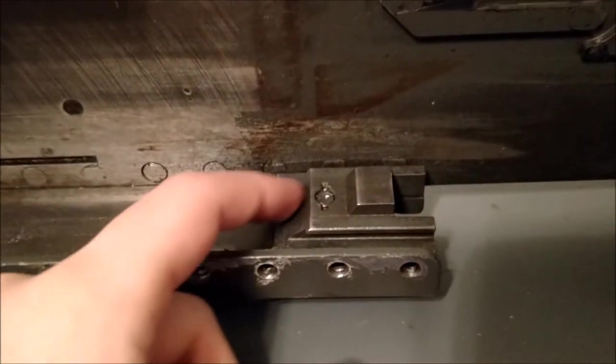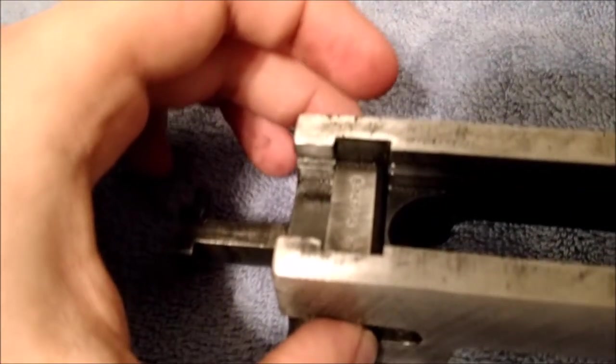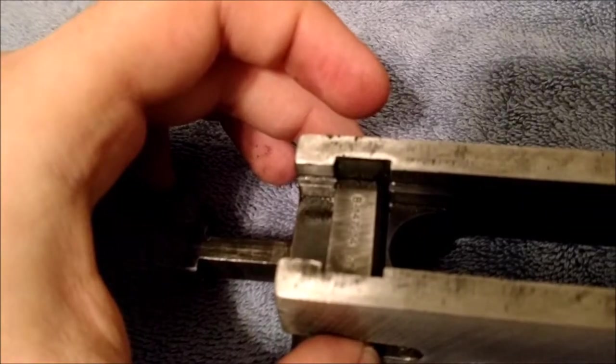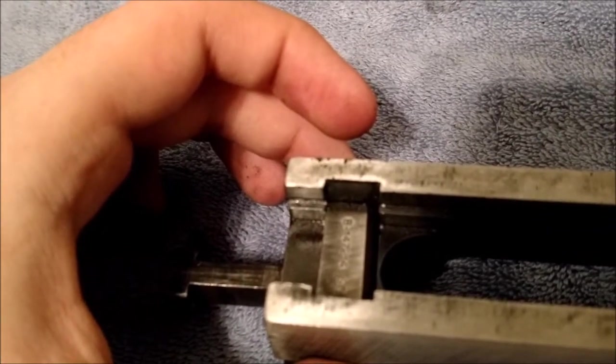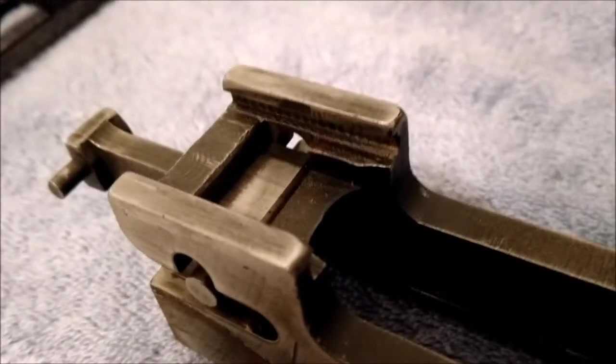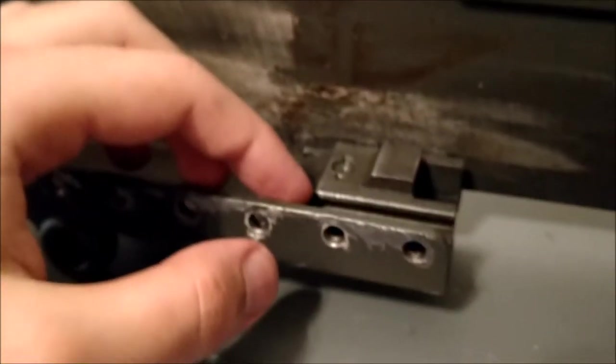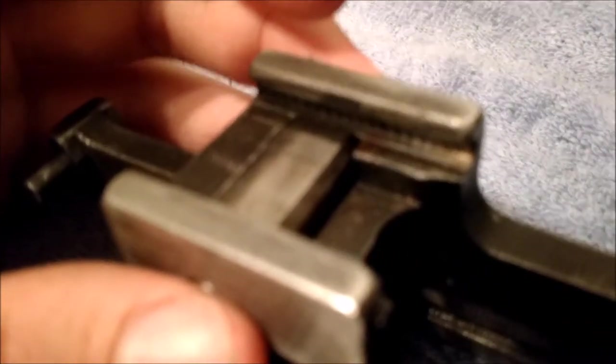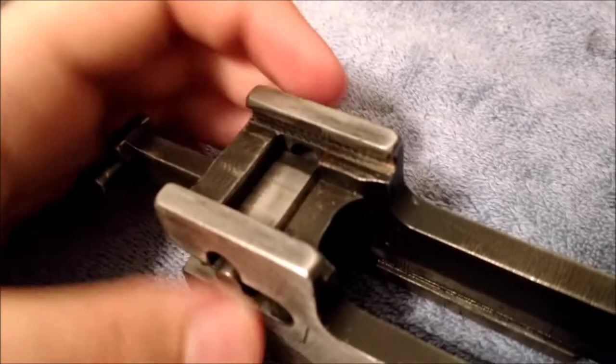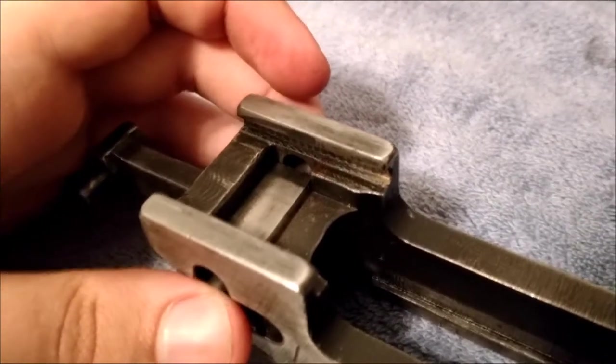And more importantly, you can see this piece which is the actual lock piece that locks the bolt. What happens is as you go into battery, that rides over this which then pushes the lock up into the underside of the bolt, and that is how it locks up.